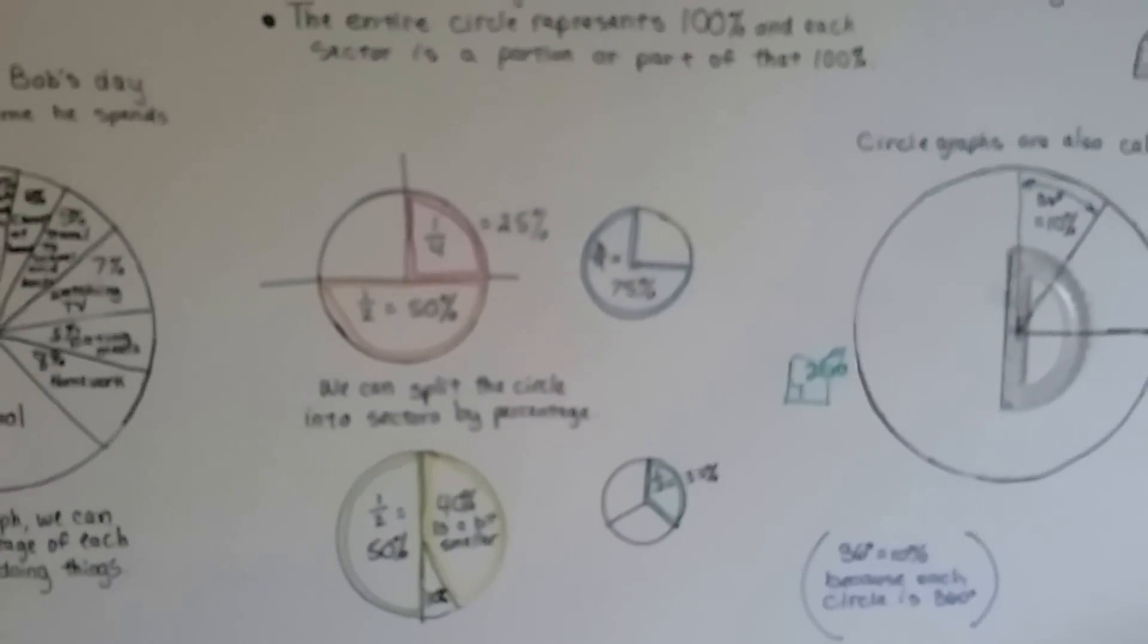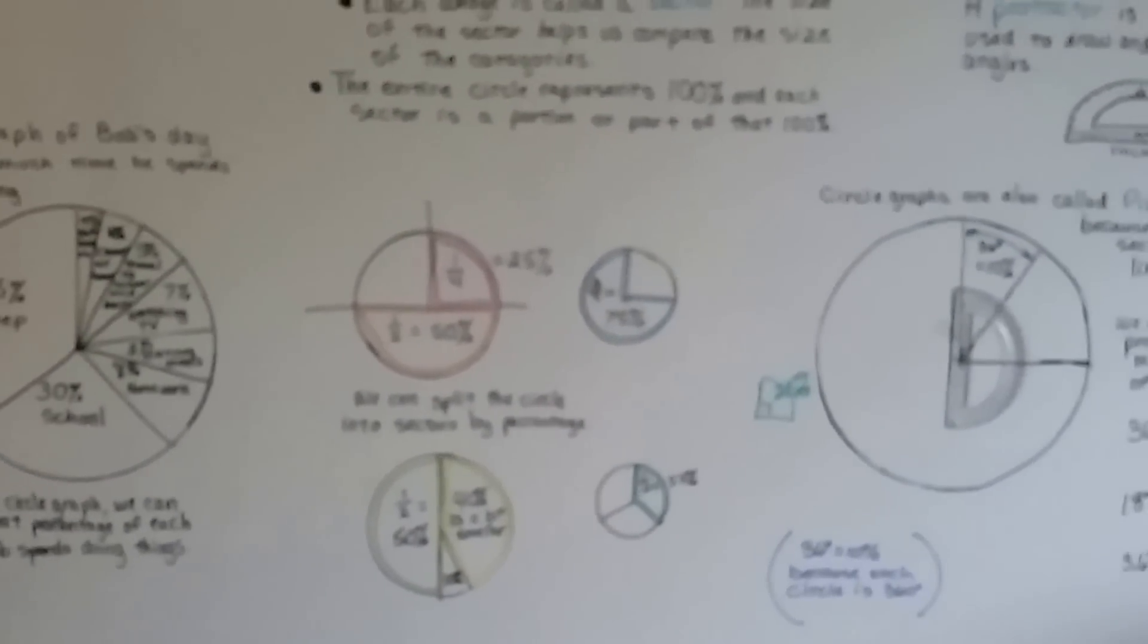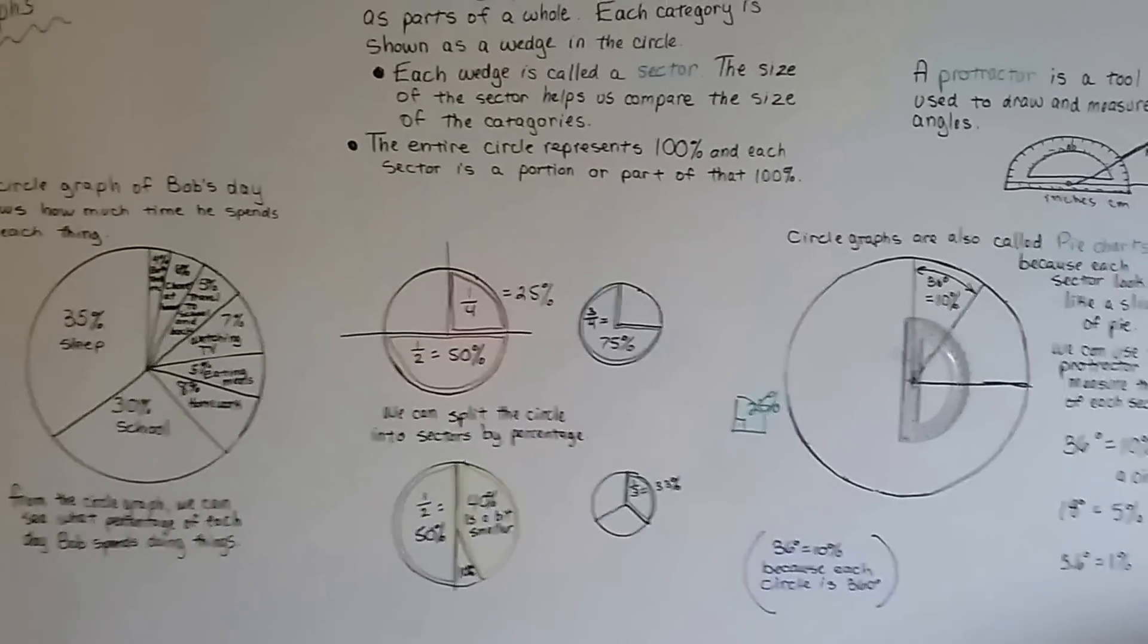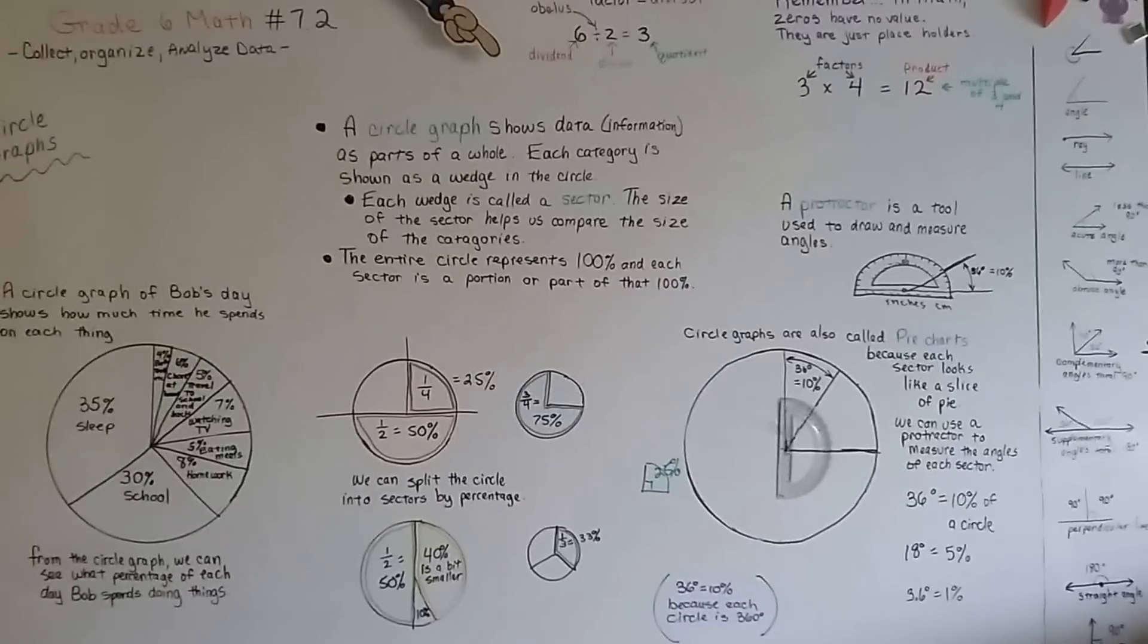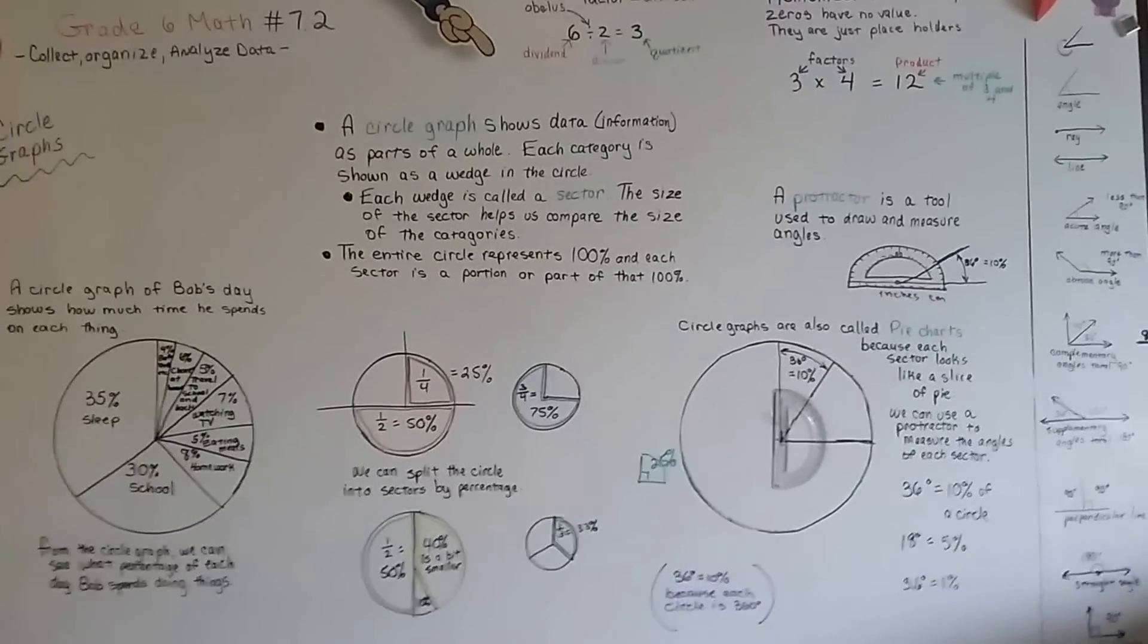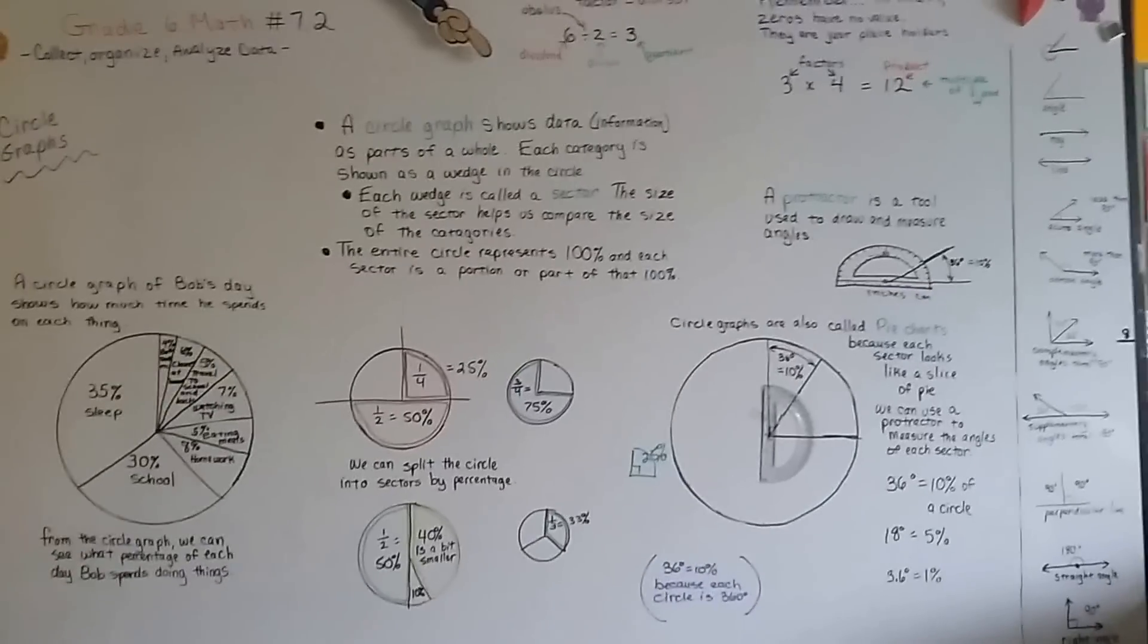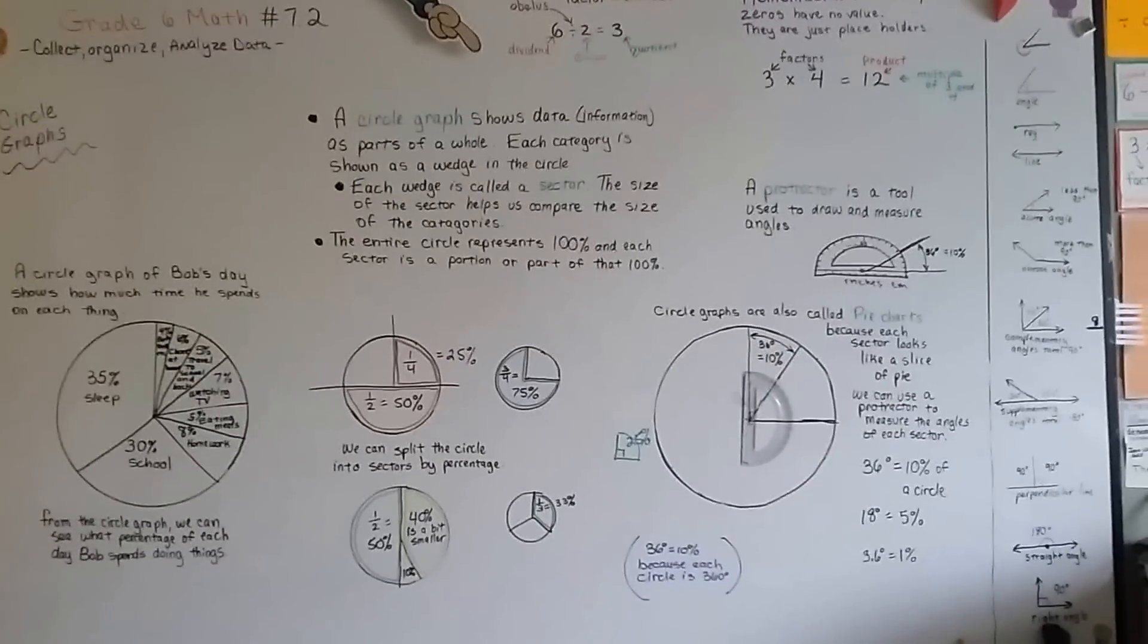The reason that 36 degrees is 10% is because there's 360 degrees in a circle. If we split that into tens, it'll be 36 for each one. We're going to get more into that as we get deeper into geometry. I'll tell you all about that when we get there.